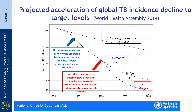Presently, TB incidence is declining slowly, but using current tools judiciously and providing universal coverage with good-quality services to private patients as well — with treatment quality as good as that in the public sector — we will be able to hasten the speed of decline by about 10% per year. However, that alone will not be sufficient to achieve the targets of eliminating TB from India or globally.